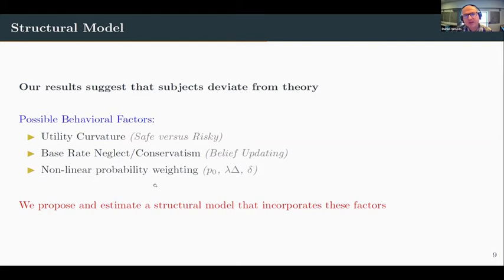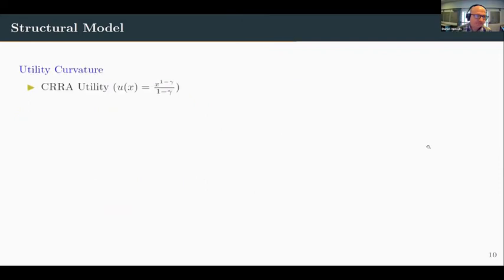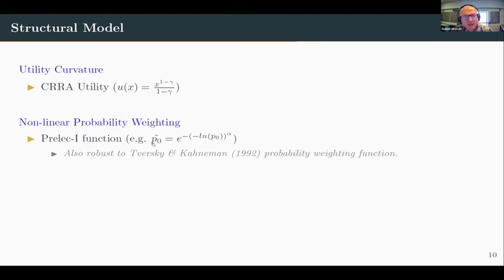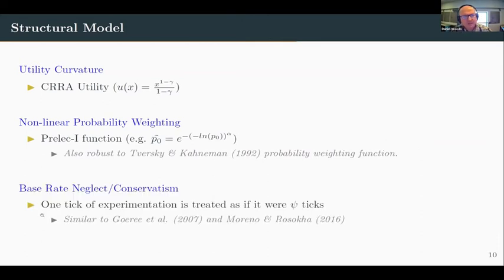We propose and estimate a structural model incorporating these factors. For utility curvature, we assume a standard CRRA utility function for any payoff. For nonlinear probability weighting, we apply the Prelec function anytime there's a probability, though results are robust to other weighting functions. For base rate neglect or conservatism, we assume subjects treat one tick of experimentation as if they had psi ticks of experimentation — if psi is greater than one they're overweighting the information from each tick; if less than one they're underweighting it.